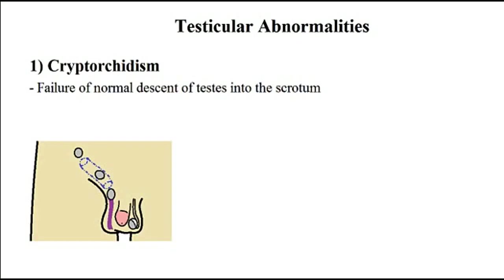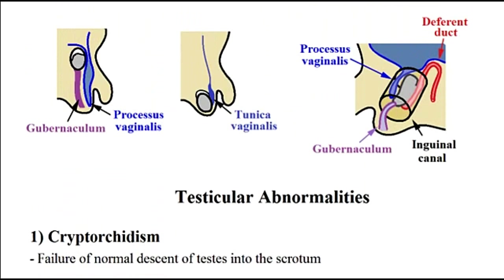There are different testicular abnormalities that you will have to know for your examination purposes and I'm going to review those with you. But before doing that, I would like to discuss how the testicles descend during embryonic development. Here I have a three-dimensional image which shows you how the testicles, processus vaginalis, as well as gubernaculum are running through the inguinal canal. Gubernaculum shows the path through which the testicles can descend from the abdomen into the scrotum, and processus vaginalis is an outpouching of the peritoneum that runs in front of the testicles.